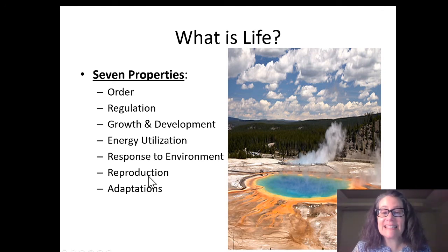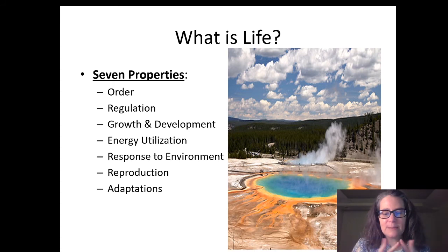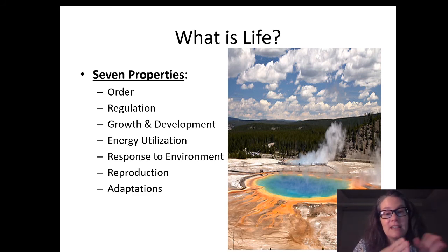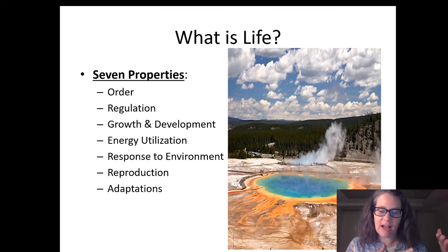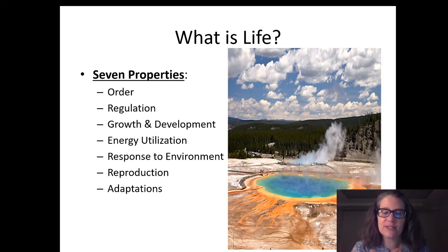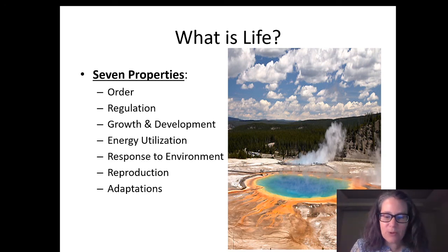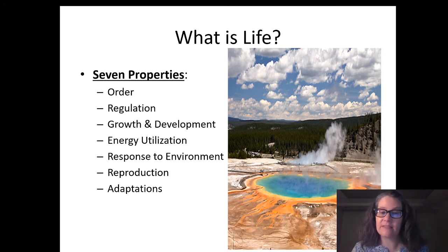Sixth on the list, living things can reproduce, and they don't reproduce randomly — it's not like a cat and a dog make an alligator. They reproduce their same species, so hippos breed with other hippos to make more hippos. This reproduction is very specific to living things, making us different than rocks and other non-living features in our world. And lastly, living things have adaptations — traits that help them survive. Adaptations accumulate in populations due to natural selection, so populations can change over time. This idea of populations changing over time is very specific to life.